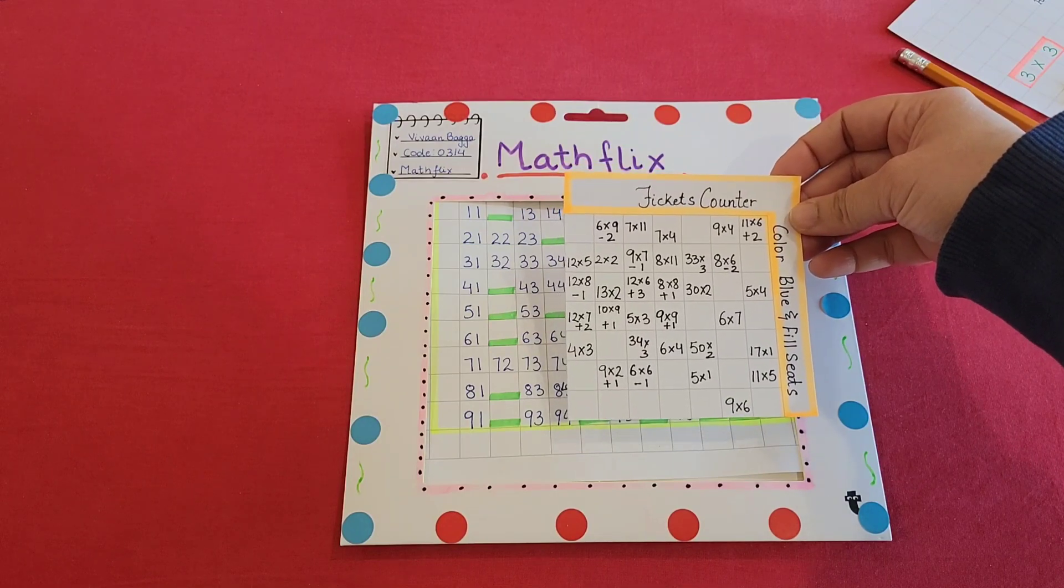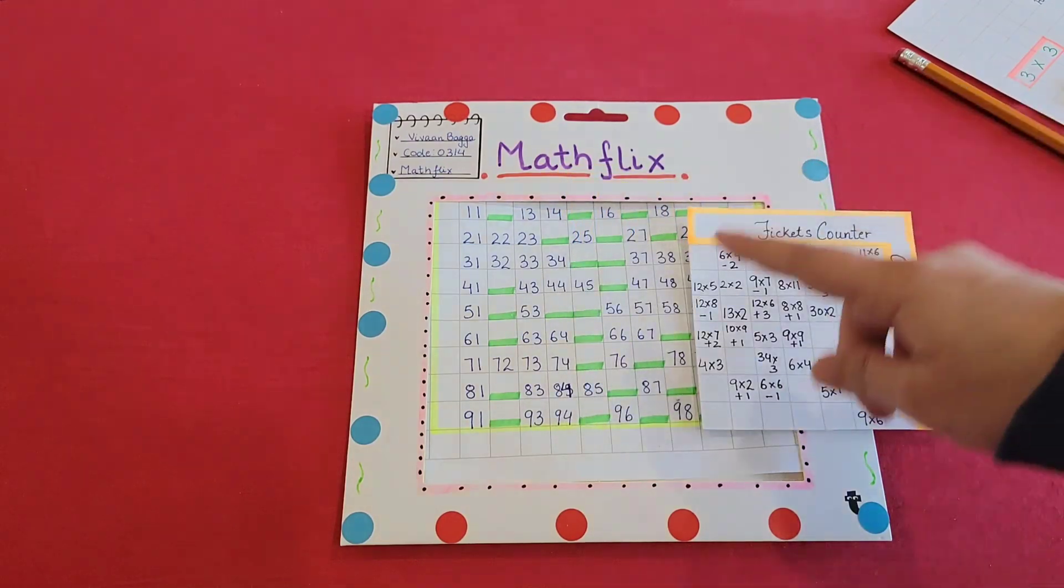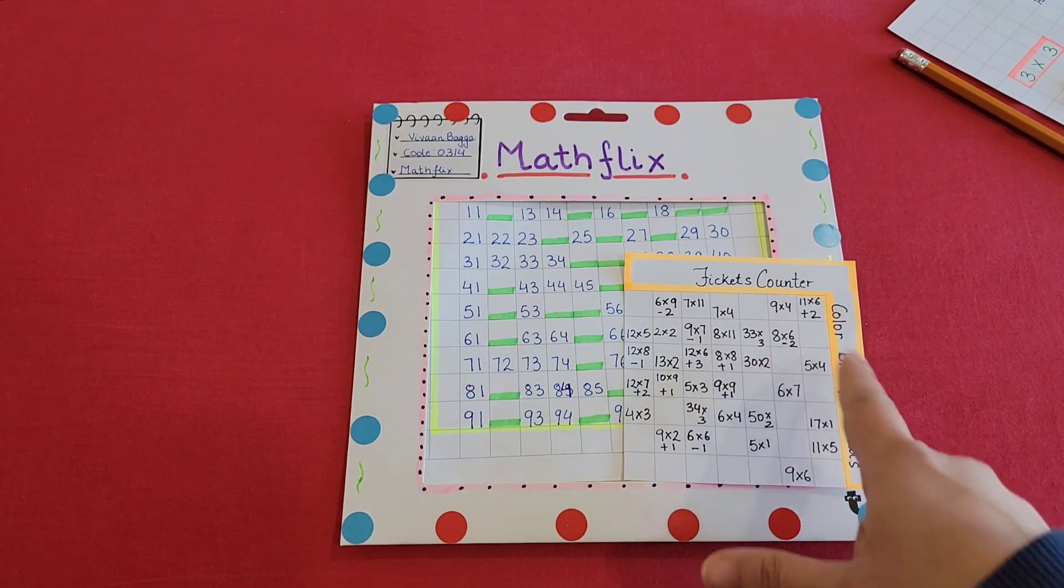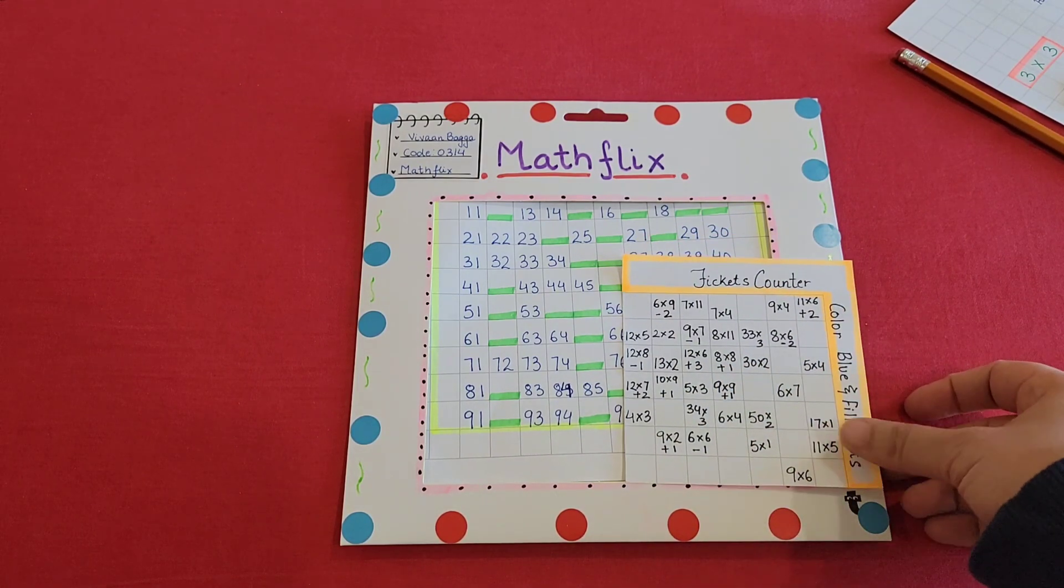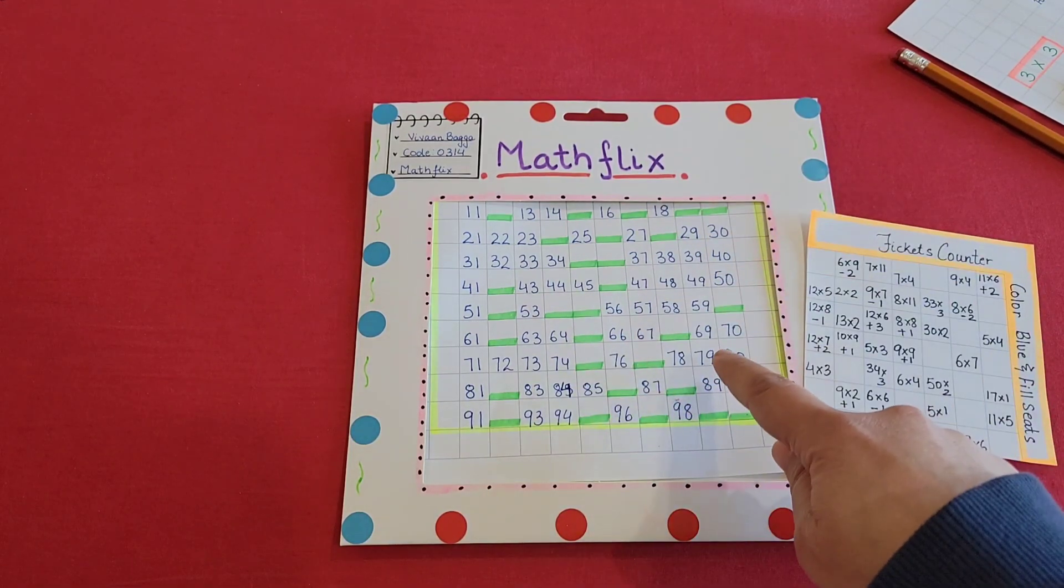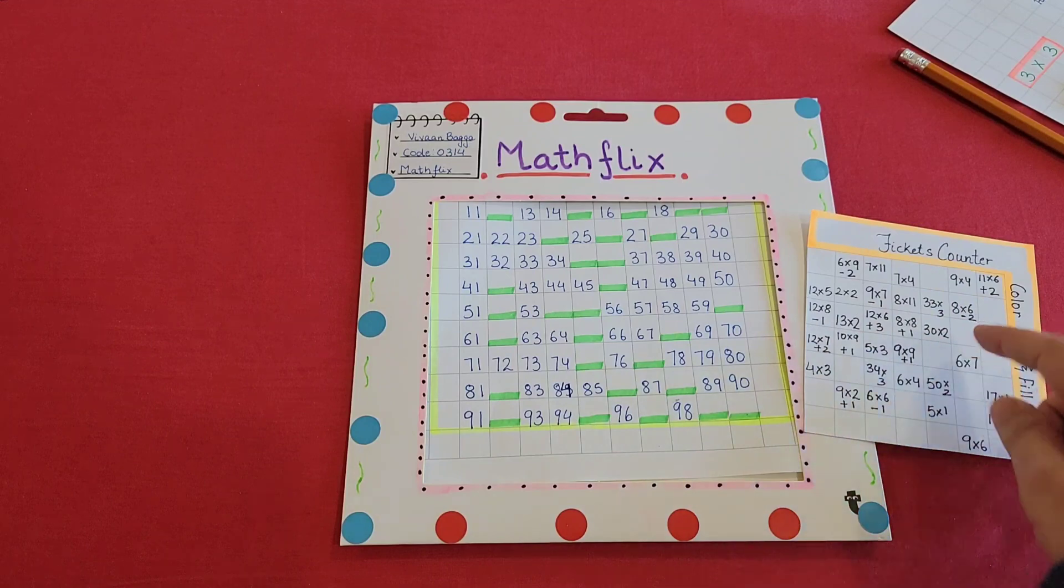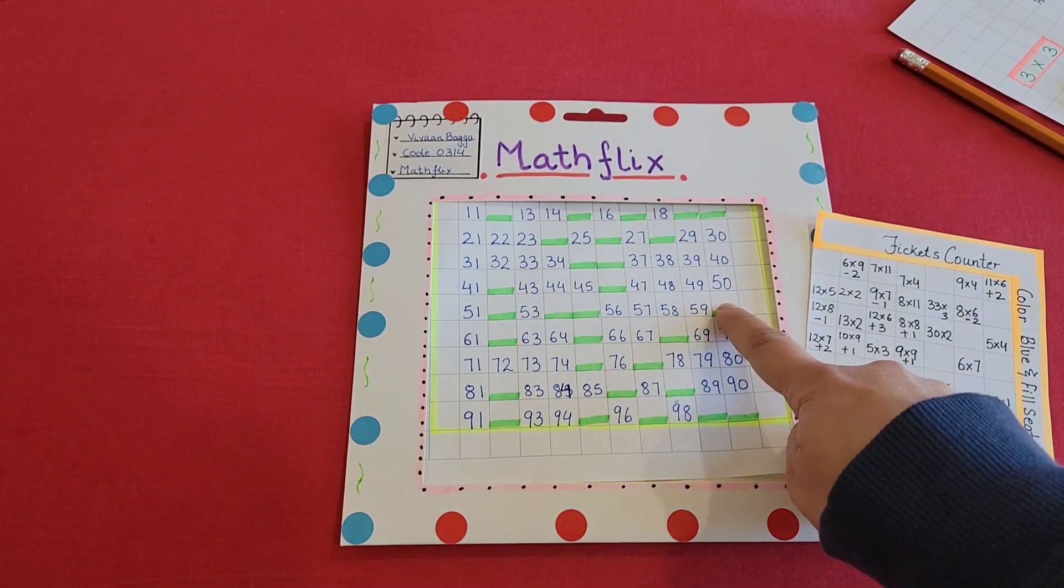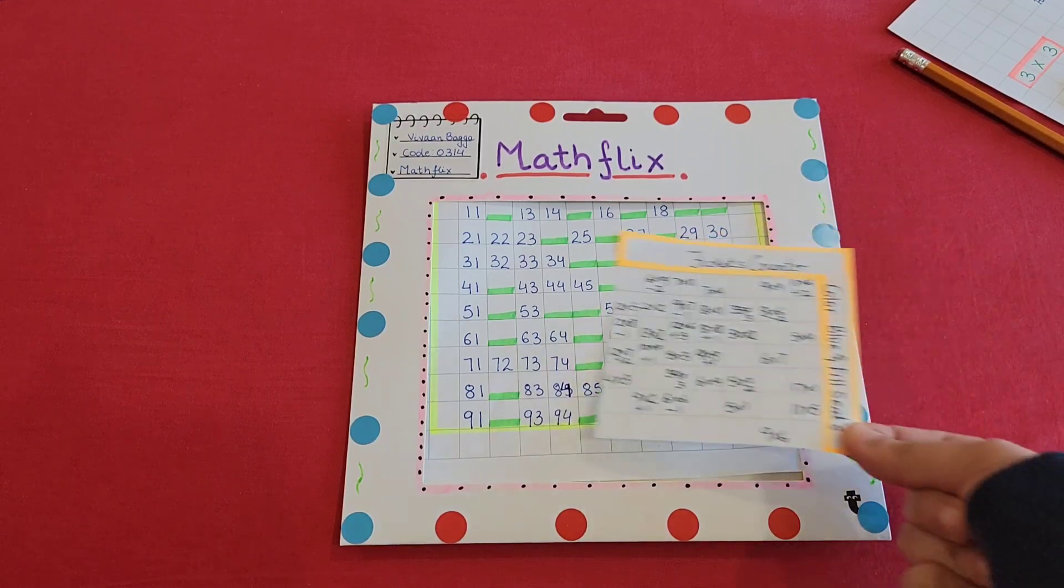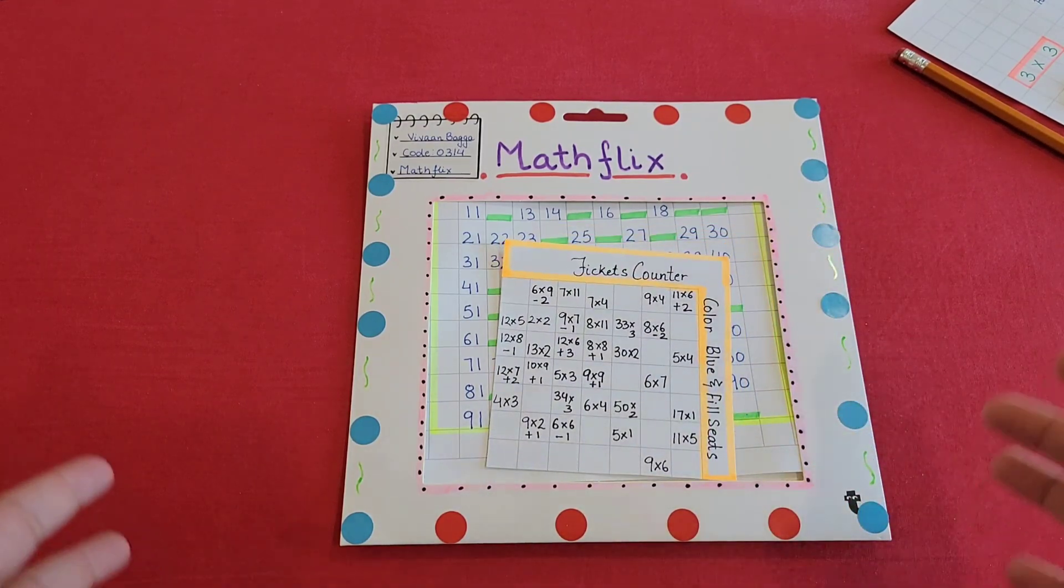So you got a color blue and fill the seats. All right, so there are different equations right here, so like 8 into 8 plus 1, 30 into 2. So you got to figure it out which equation answer matches here and you're going to fill that number. So 30 into 2 is like 60, so the 60 is gonna come right here and you're gonna color it. So by just doing that we are going to have a theater full of Math Flix.